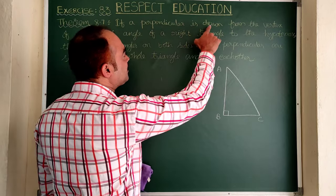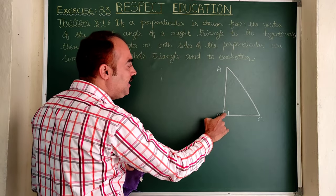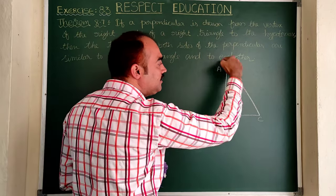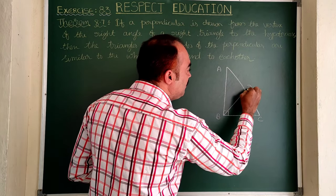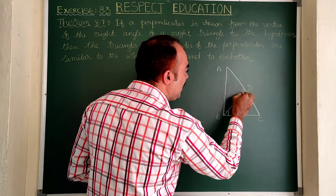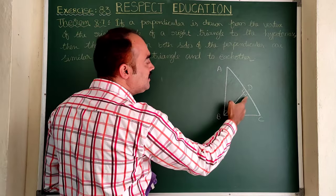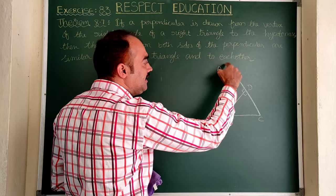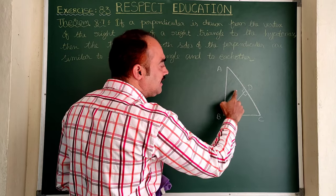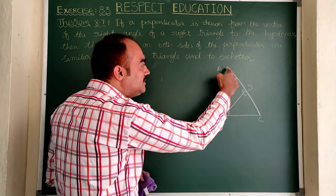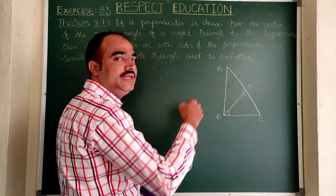If a perpendicular is drawn from the vertex of the right angle — means from B — a perpendicular is drawn to the hypotenuse AC. Let us draw that perpendicular and name it BD. Here, angle D is also 90 degrees. Then the triangles on both sides are: triangle ADB is the first triangle, and triangle CDB is the second triangle. These two triangles are similar to the whole triangle and also to each other.